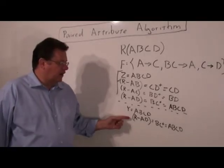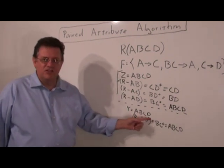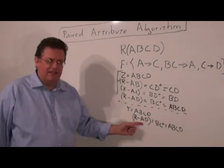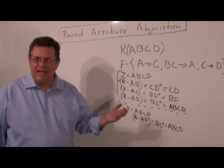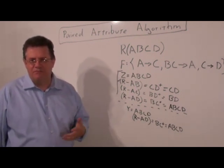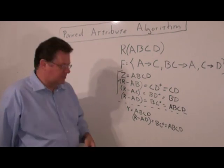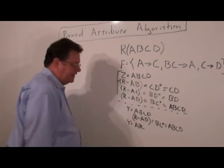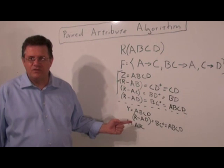At this point, R minus AD is BC closure, which contains both A and D. We could either get rid of the A or we could get rid of the D. I'm choosing just to get rid of the D, but it's arbitrary choice. So our Y is now ABC. We're down to three attributes.